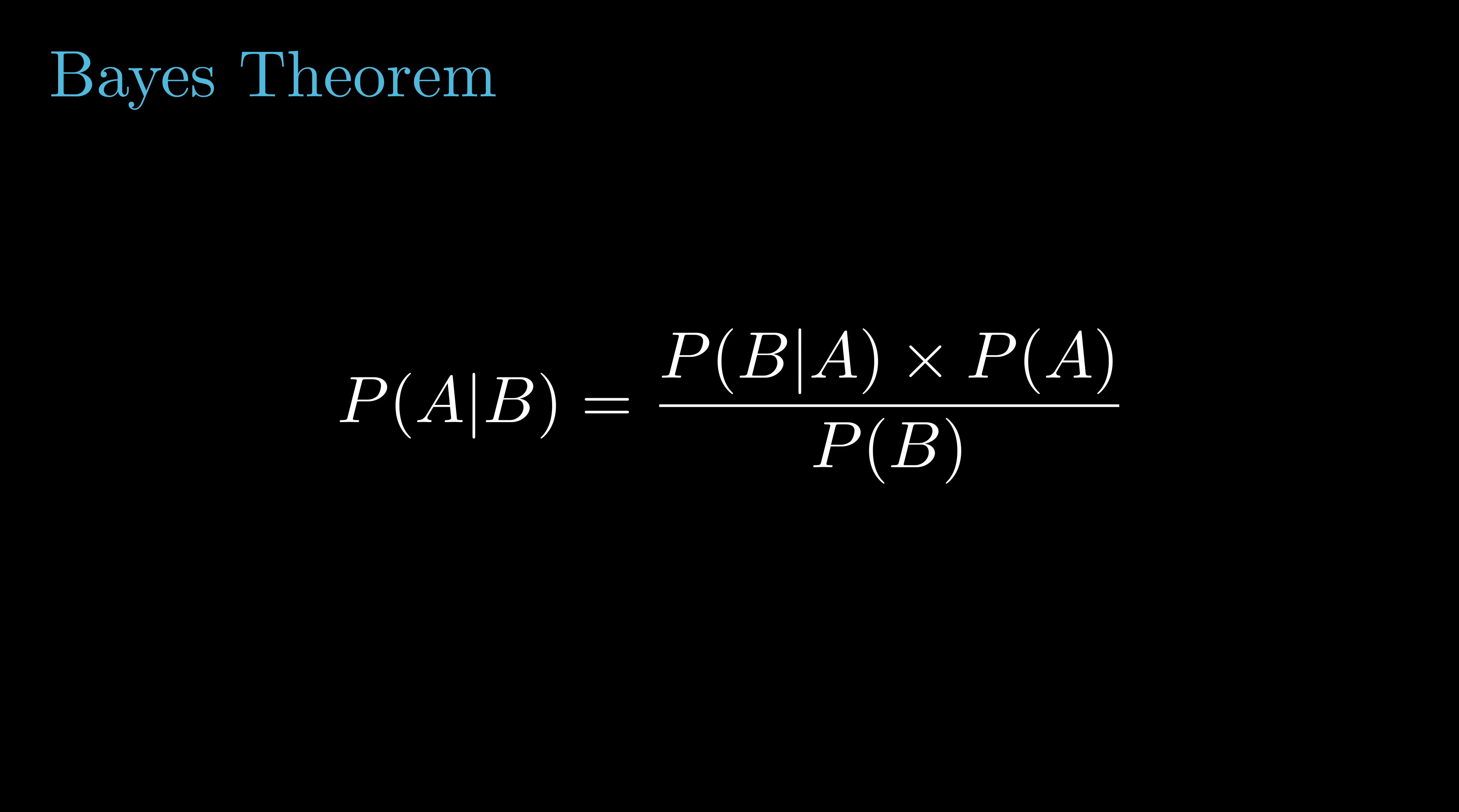To do this flip, we will also need the probability of A and the probability of B. We plug those three pieces of information together, and that will give us probability A given B.